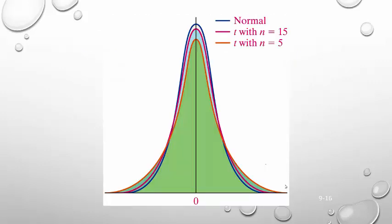Here's an example of what that means. The blue curve is a normal curve. I'm showing two t-distributions: one with n = 15 and one with n = 5. As the sample size increases from 5 to 15, the curve gets more and more normal. The sample size of 15 has less area in the tails — it gets skinnier and taller as the sample size increases.